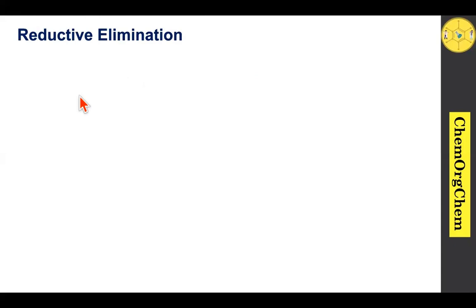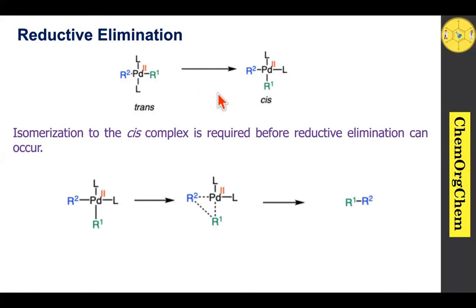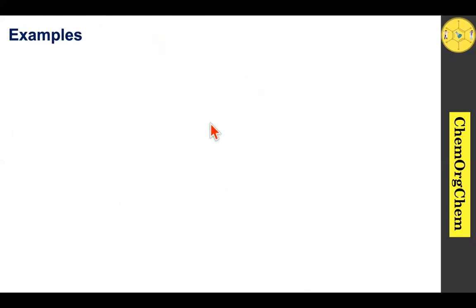Reductive elimination is just the reverse of the oxidative addition process. Before reductive elimination can occur, the trans complex must convert into the corresponding cis complex. This cis complex then undergoes reductive elimination via a concerted process in which the R1–R2 new bond forms and the palladium-carbon bonds break, producing the corresponding carbon-carbon coupling product.